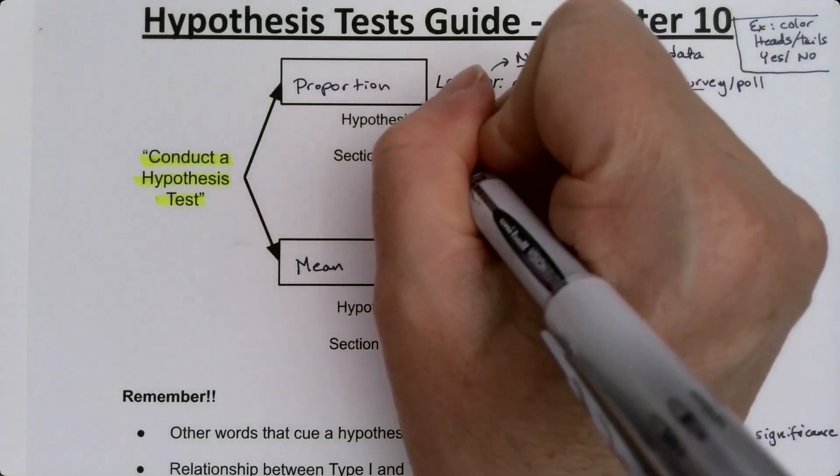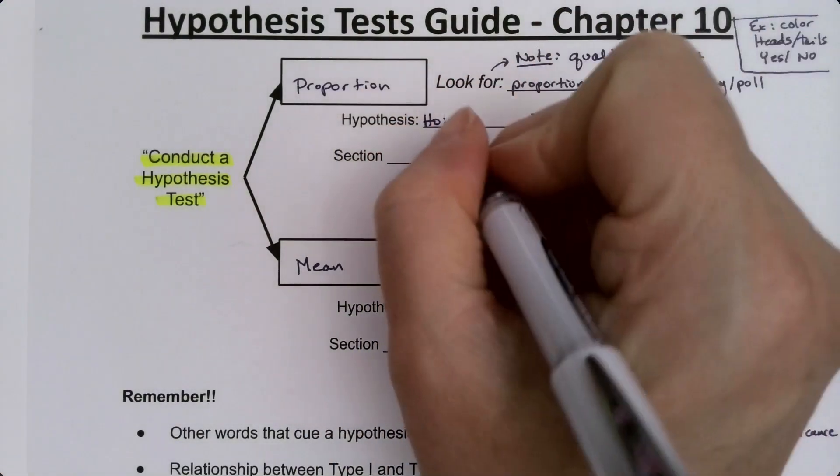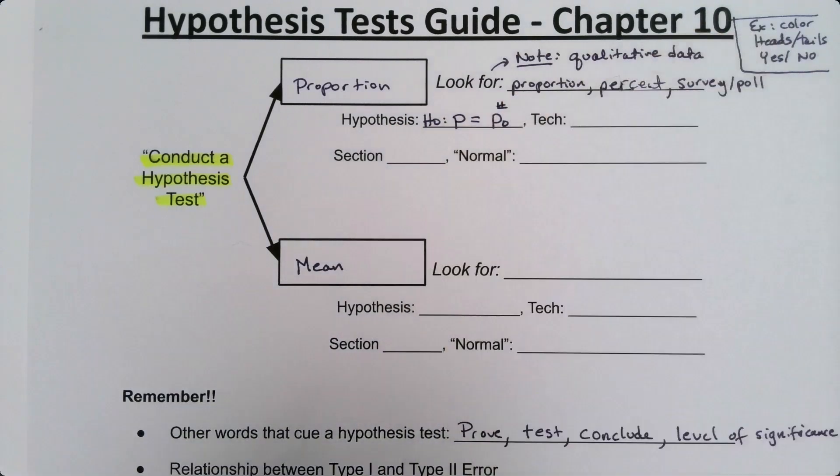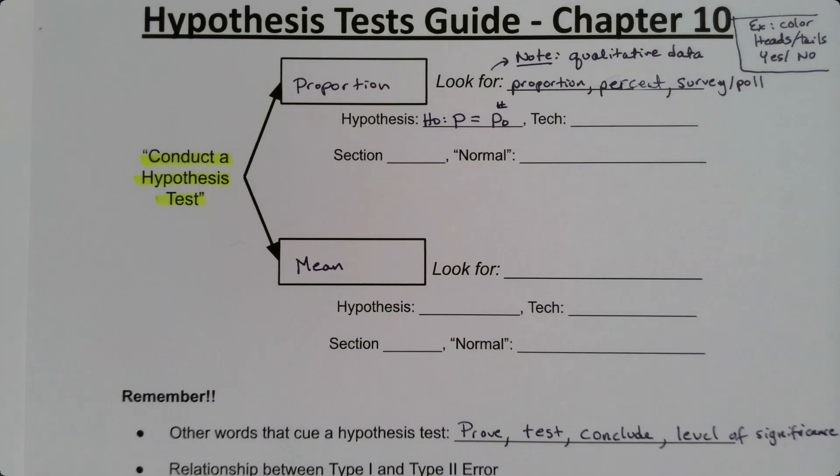Your null hypothesis is always p equals p₀, where p₀ is some number. So you'll have some number for p₀.